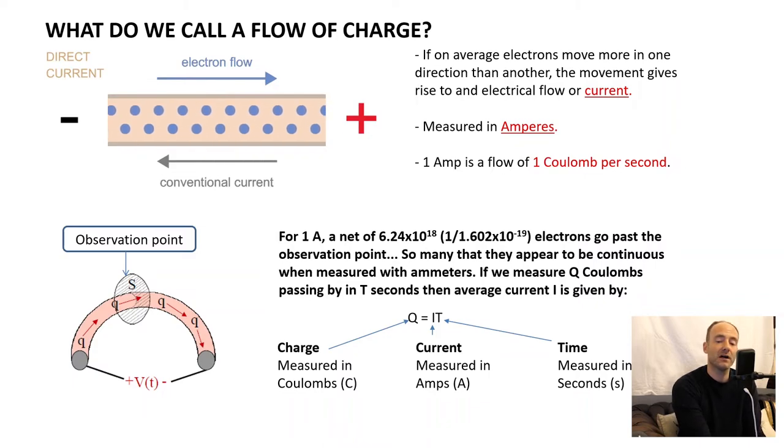There's an equation for this. Q, which is our charge measured in coulombs, is equal to I, our current measured in amps, times the time of our observation, measured in seconds. So if we have one amp in one second, we'll have one coulomb of charge past the observation point. If we have 10 coulombs of charge and we know our time is 10 seconds, we'll have one amp.